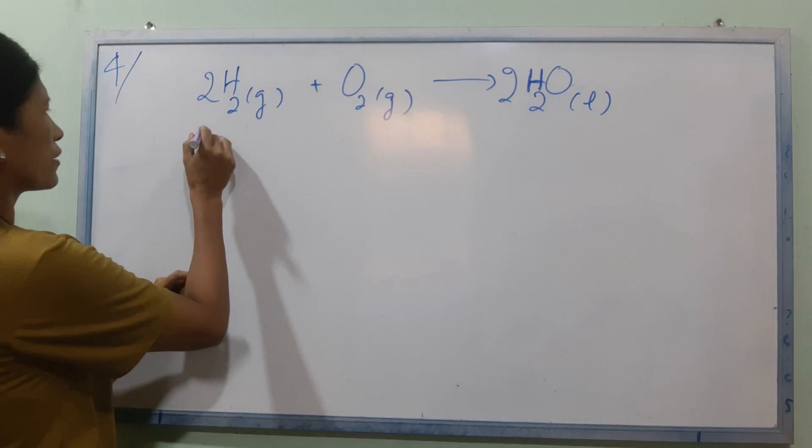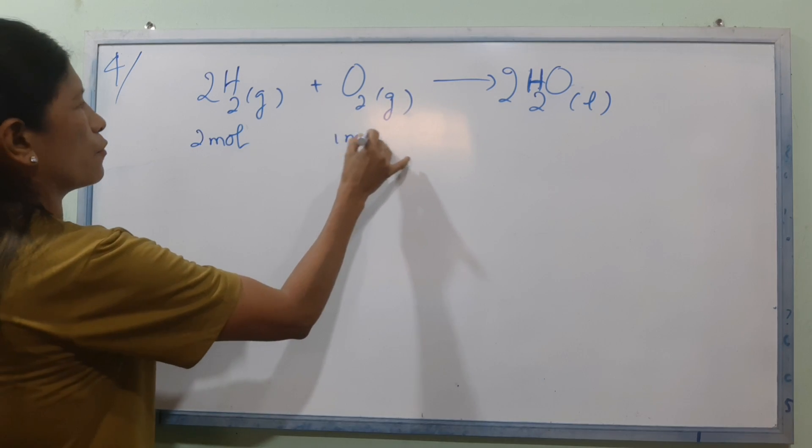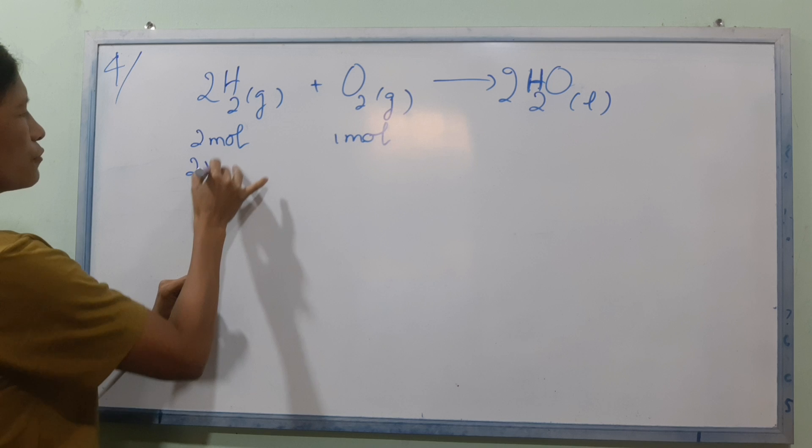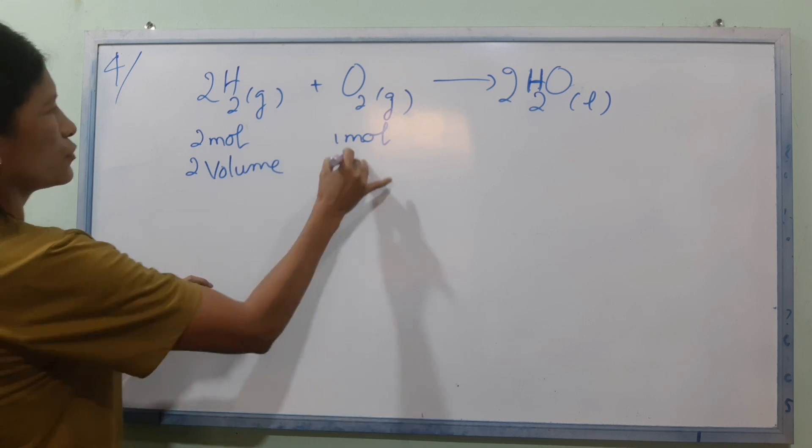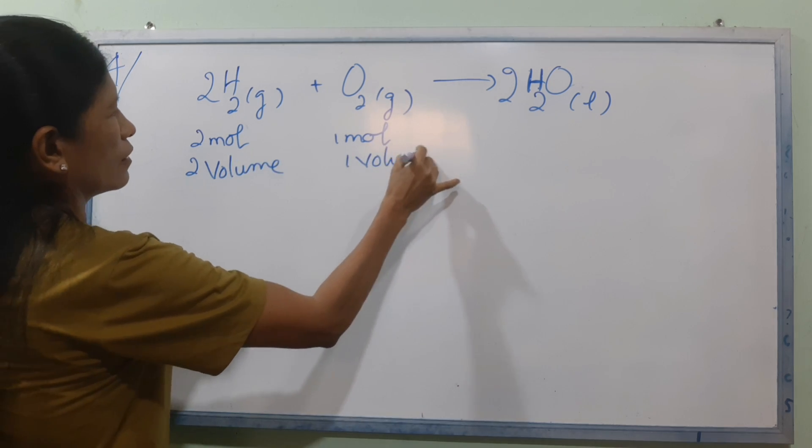This is 2 moles, 1 mole. So 2 volumes of H2 to 1 volume of O2.